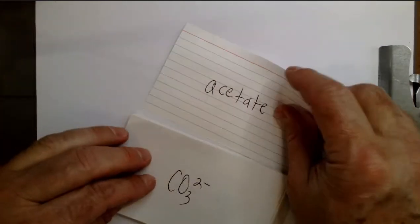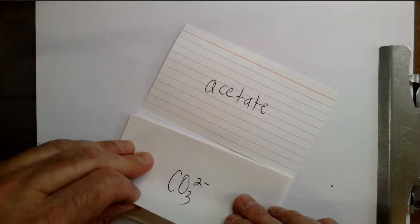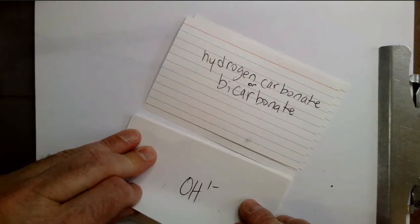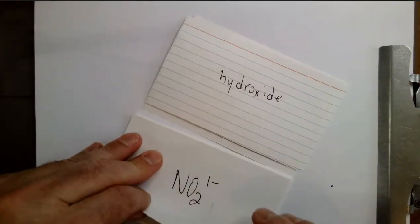C2H3O2 1- acetate. CO3 2- carbonate. HCO3 1- hydrogen carbonate or bicarbonate. OH 1- hydroxide.